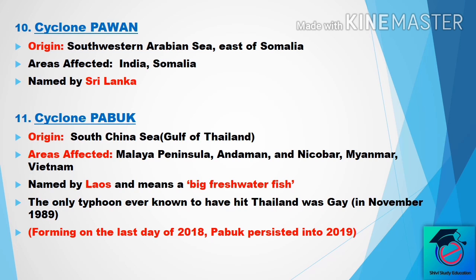The eleventh one is Cyclone Pabuk. This region was from the South China Sea, that is the Gulf of Thailand. Areas affected are the Malay Peninsula, Andaman and Nicobar Islands, Myanmar, and Vietnam.